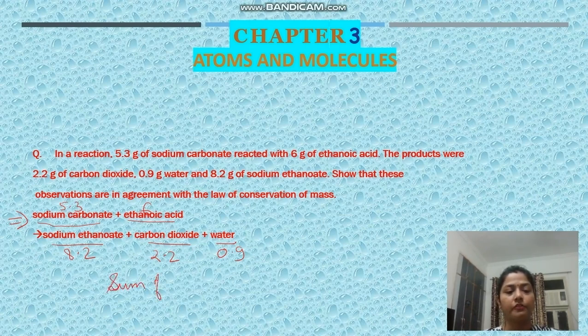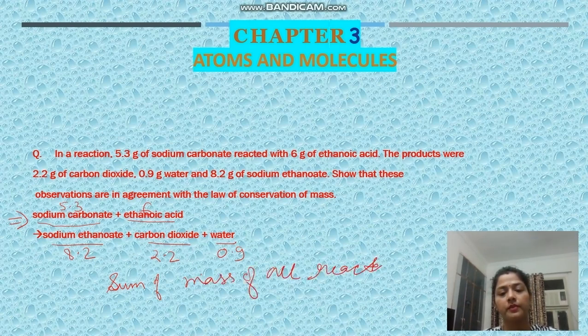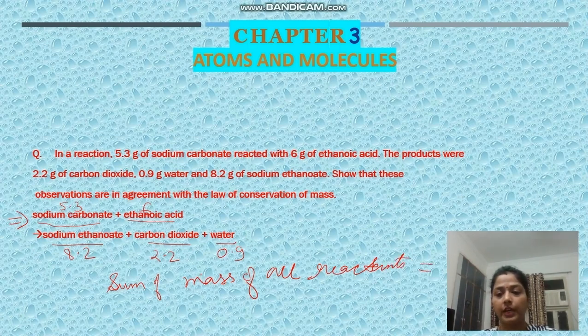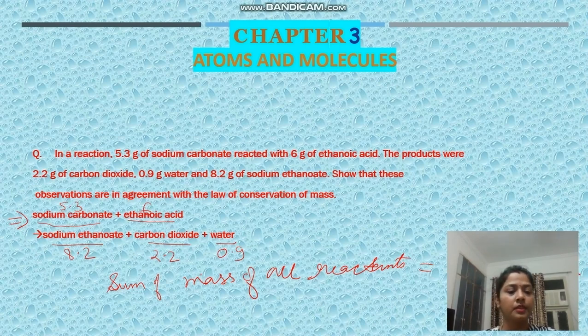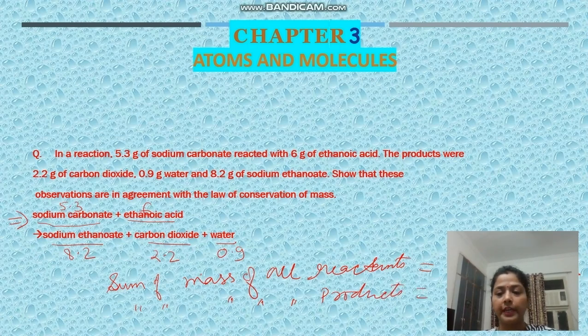So what do we do? We calculate the sum of mass of all reactants. It is 5.3 plus 6, which equals 11.3 grams. Then the sum of mass of all products will be 8.2 plus 2.2 plus 0.9, which also equals 11.3 grams. You can see the mass is conserved.